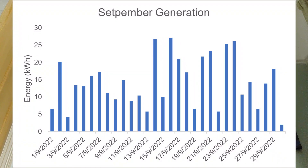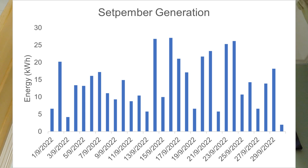With that covered, let's look at what's happened over the month of September. I am going to be looking off to the side because I've got my spreadsheet here. So let's start off with this graph — this is our total solar energy generation through September, split down by day. Over September, we generated 427.9 kilowatt hours of electricity.